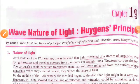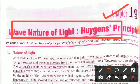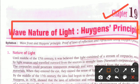Hello students, welcome to today's session of physics. I'm going to present chapter number 19, which is the wave nature of light and Huygens' principle. Before starting the chapter, let's discuss what we have to study: the first topic is the wavefront and Huygens' principle, and the proof of laws of reflection and refraction using Huygens' principle.